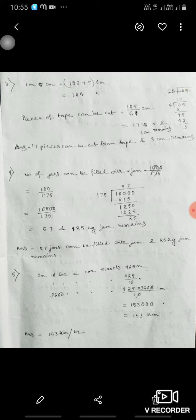Now 9 meter in 10 seconds. A car travels 425 kilometer, then 1 second 425 upon 10, so 3600, that means 425 upon 36, that is 153,000 meter. That will be 153 kilometer per hour the car will move.